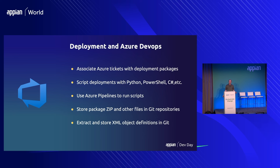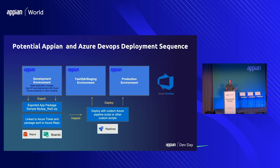Now for some Azure DevOps-specific things to include in your Appian deployment. We saw how to associate a ticket — that's the easiest way to link a package to an Azure epic or story. You can also name the package the same as an Azure story if you don't want to use the ticket URL. Deployments can be scripted with all the various languages we mentioned, and if you're using Azure Pipelines to run your scripts, scripts can be launched and run using that mechanism. I've got a short two-minute video to show how the whole process works.